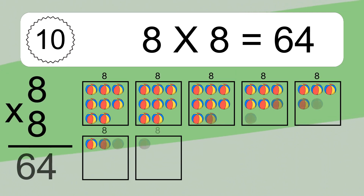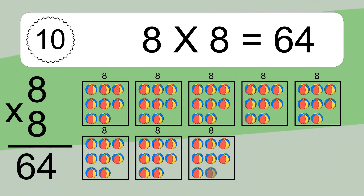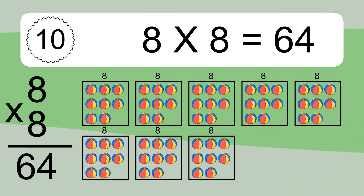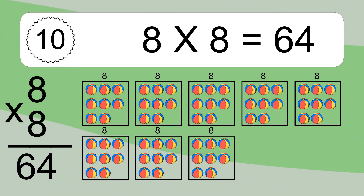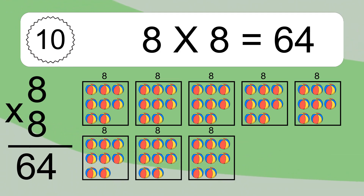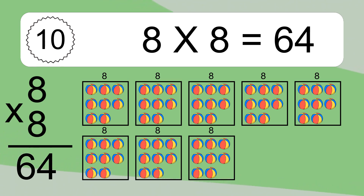8 times 8 equals what? 8 times 8 equals 64. We have 8 boxes, and each box has 8 colorful balls inside. If you count all the balls in all the boxes together, you will have 8 times 8 balls. This equals 64 balls.